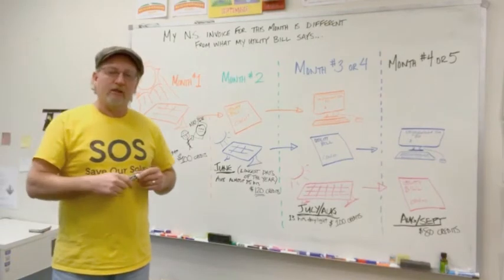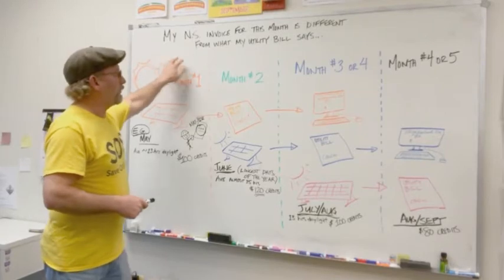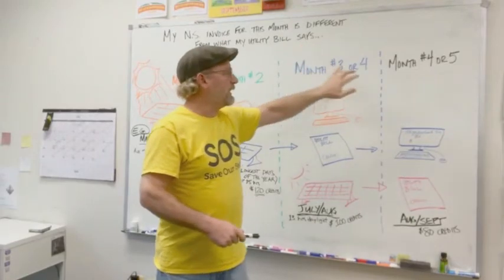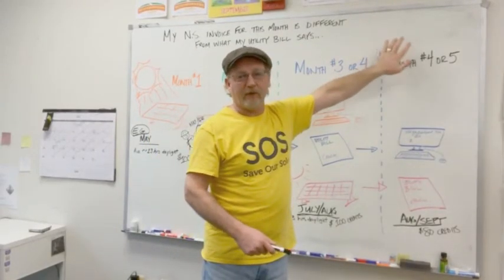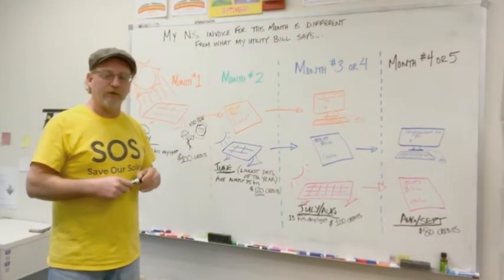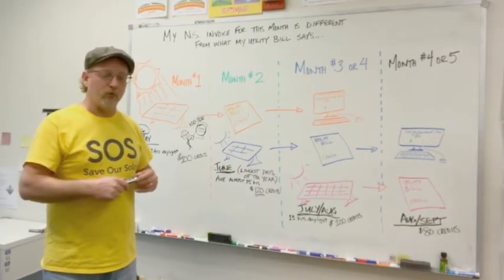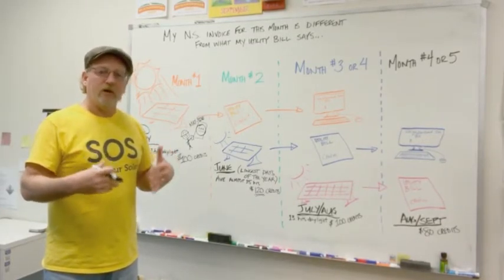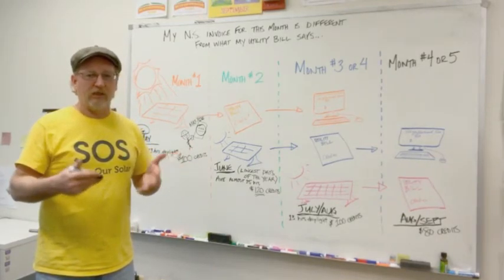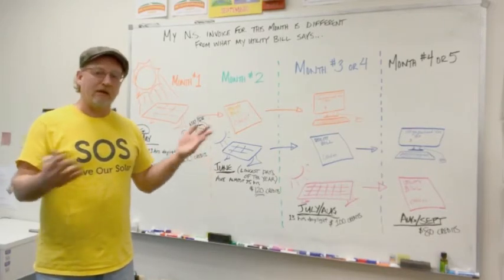So first, let me explain that this is an example where we have month number one, month number two, month number three or four, depending on your utility, and month number four or five, depending on your utility and when your individual account billing cycle starts and ends. Another important point is that we at Neighborhood Sun do not have the ability to look at your Pepco, BGE, or utility bill unless you provide it to us. That information is kept at the utility.